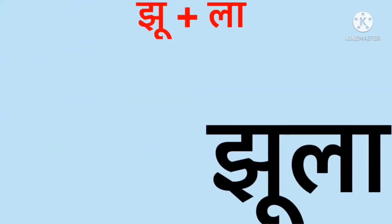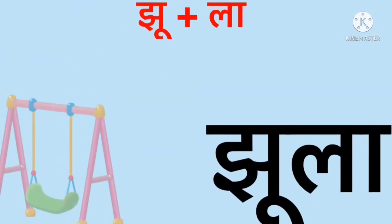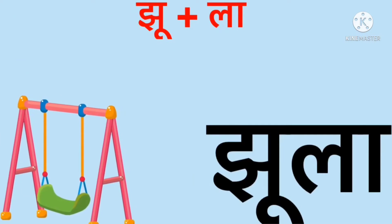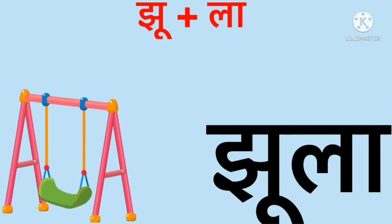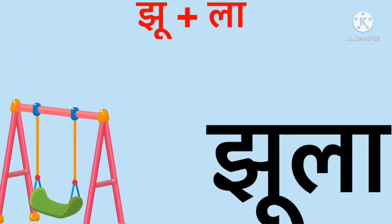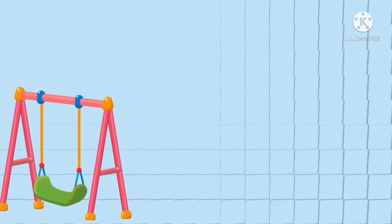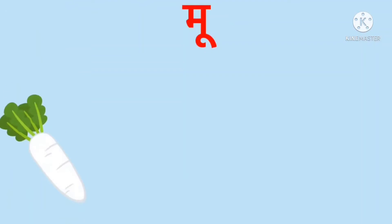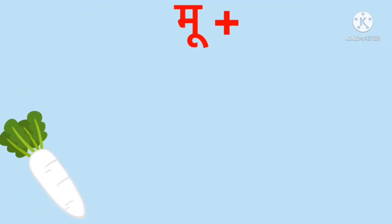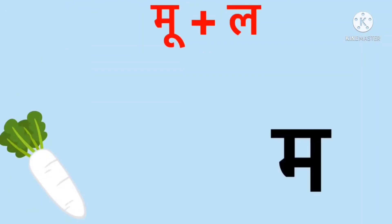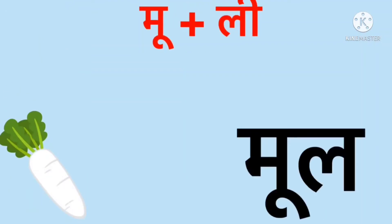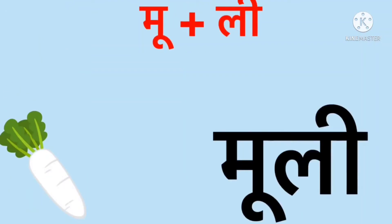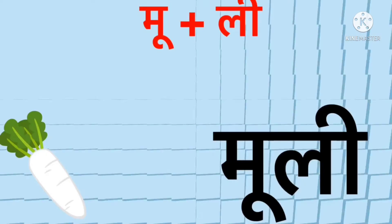Jha mein Badi U ki matra - jhu. La mein A ki matra - la. Jhula. Ma mein Badi U ki matra - mu. La mein Badi ki matra - li. Muli.